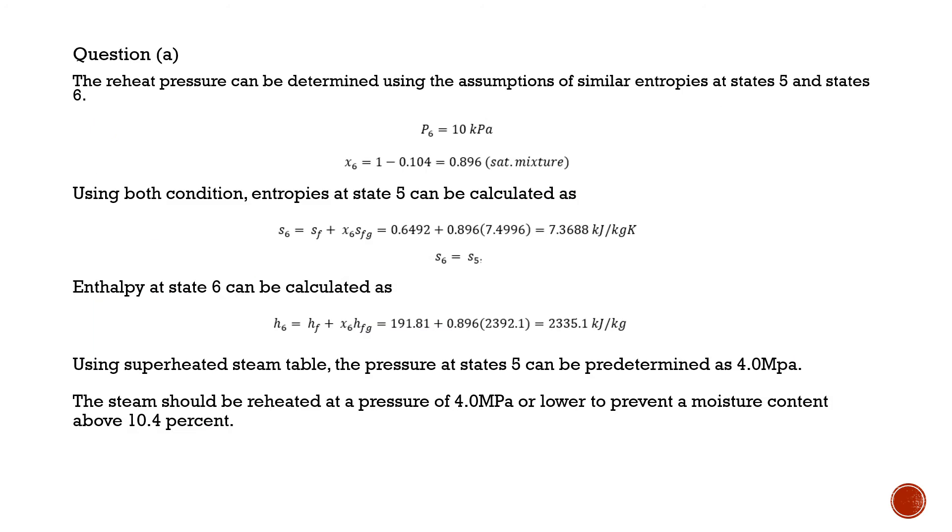For question A, by using thermodynamic formula with assumption of similar entropy between state 5 and 6, we can determine the pressure of inlet steam at low-pressure turbine as 4 MPa using super-heated steam table.